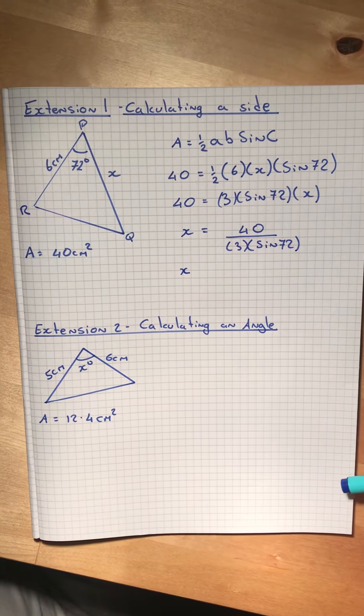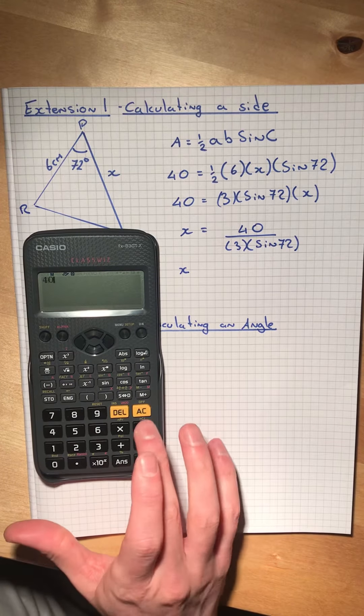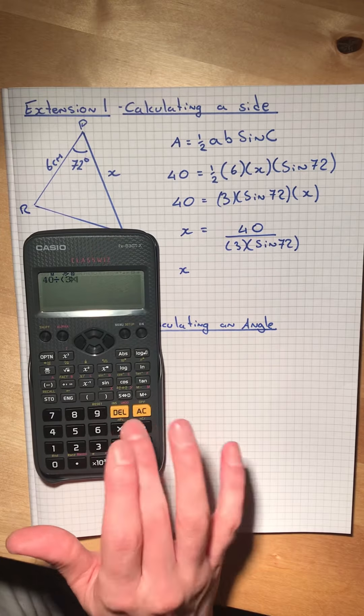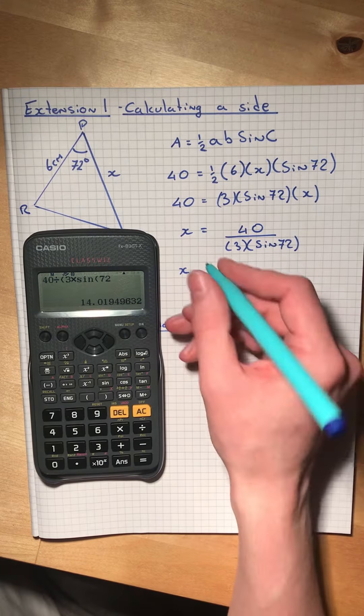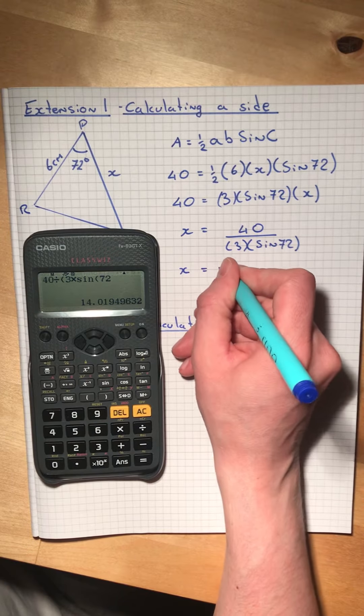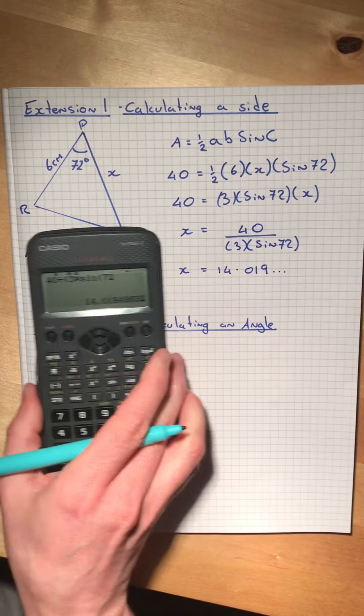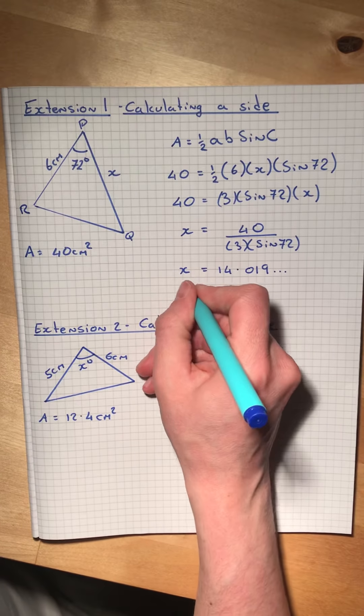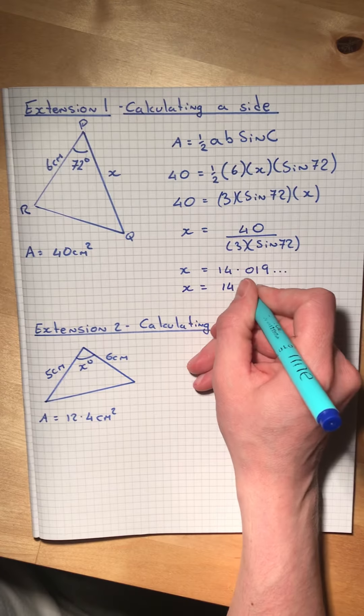Get our calculator: 40 divided by bracket 3 times sine 72, which gives us 14.019. To one decimal place, we round to 14.0, so I'll just leave it as 14 centimeters.